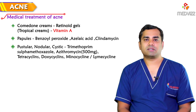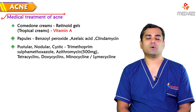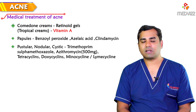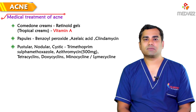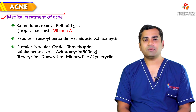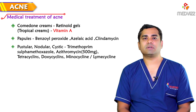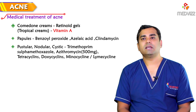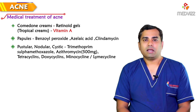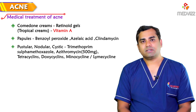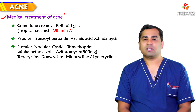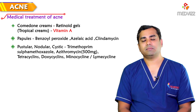For pustular, nodular, or cystic eruptions, we choose oral medications. Options include trimethoprim-sulfamethoxazole combination, macrolide antibiotics such as azithromycin 500mg, and the tetracycline group — tetracycline, doxycycline, minocycline, or lymecycline, a newer molecule — which are very effective against Propionibacterium acnes. There is also the important molecule isotretinoin, an isomer of vitamin A, for systemic treatment.